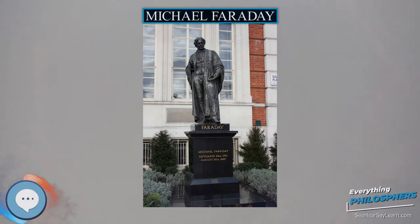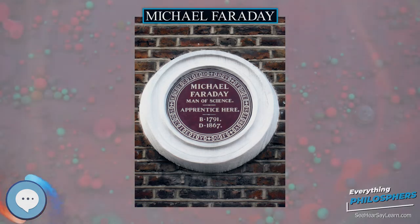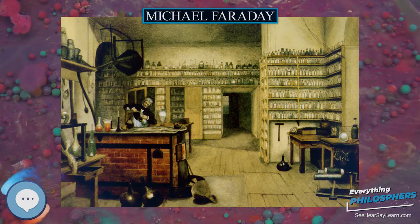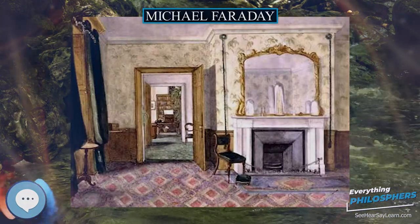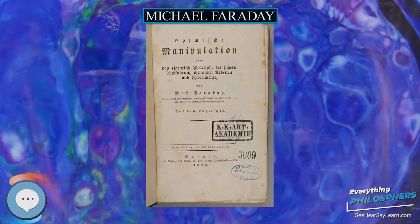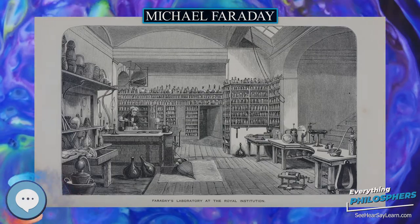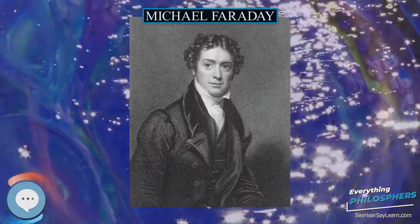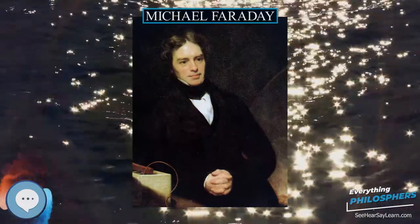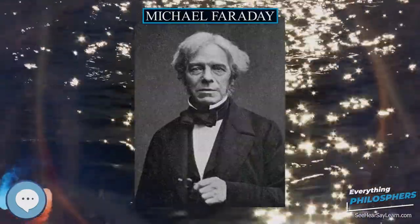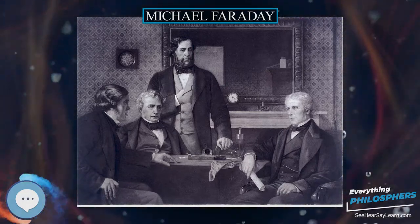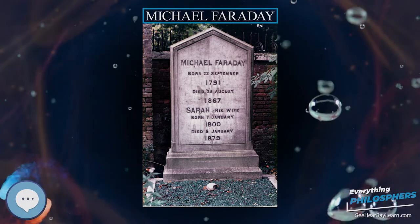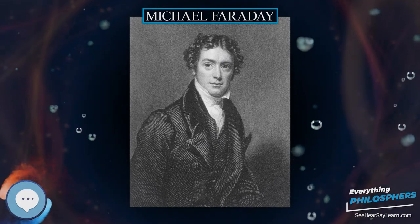Faraday was also active in what would now be called environmental science and engineering. He investigated industrial pollution at Swansea and was consulted on air pollution at the Royal Mint. In July 1855, Faraday wrote a letter to The Times on the subject of the foul condition of the River Thames, which resulted in an often-reprinted cartoon in Punch. Faraday assisted with the planning and judging of exhibits for the Great Exhibition of 1851 in London, and advised the National Gallery on the cleaning and protection of its art collection. Faraday also weighed in negatively on the public's fascination with table-turning, mesmerism, and séances, chastising both the public and the nation's educational system.